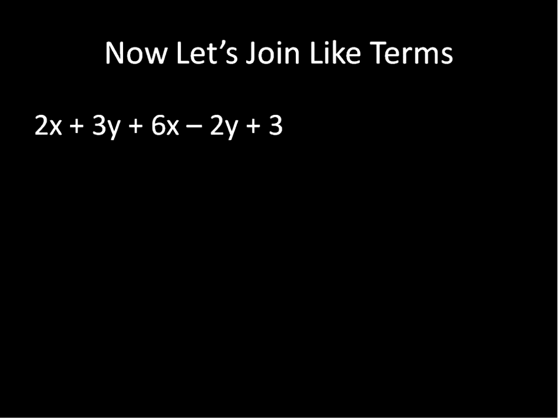All right, so let's go ahead and actually join together some like terms. In this question, we have 2x plus 3y plus 6x plus 2y plus 3. The like terms that we have, we have 2x and 6x, and then we have 3y and negative 2y. Those are the like terms. So we can join those ones together, and I'll join them together using similar colors. And we can, in our first step, rearrange the expression so that it lines up all of the like terms next to each other.